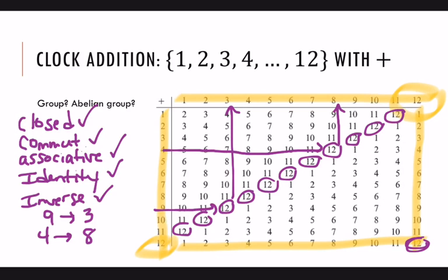So then based on these properties, do you remember the definition of a group? Is this a group? Well, yes. Yes, it is. Group means that it has closure, associative, identity, and inverse properties. All of those are true, so it is a group. Is it abelian? Yes, it is. It's commutative. So this is an abelian group.